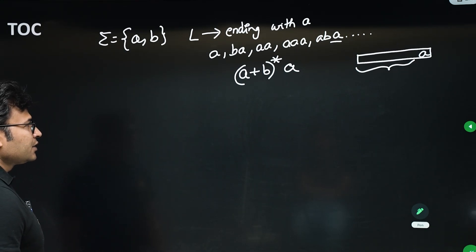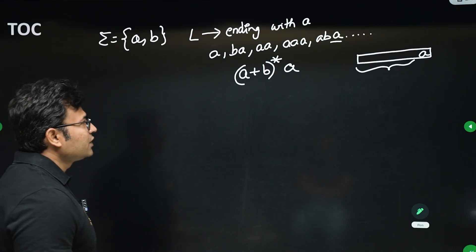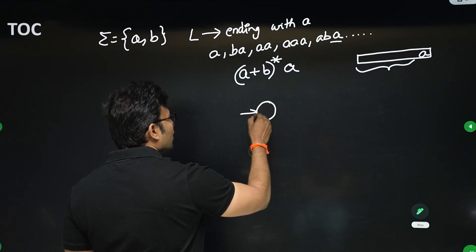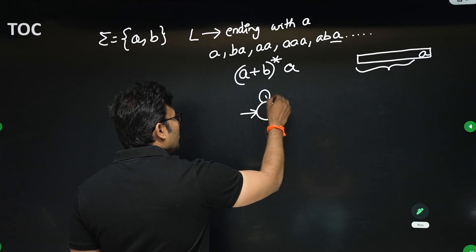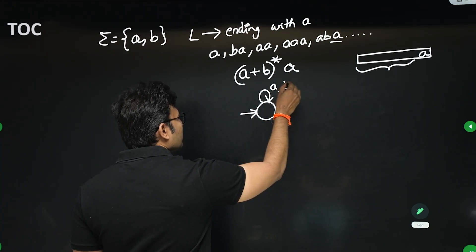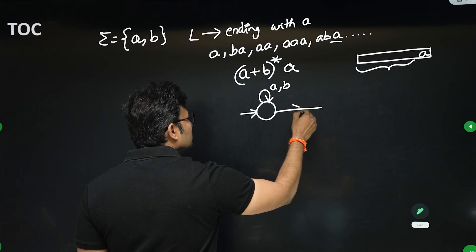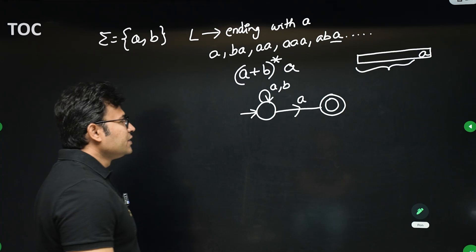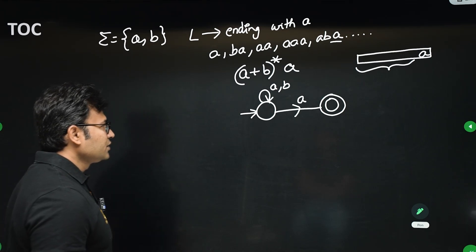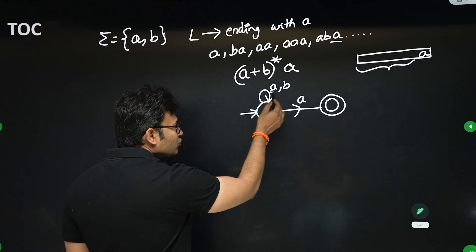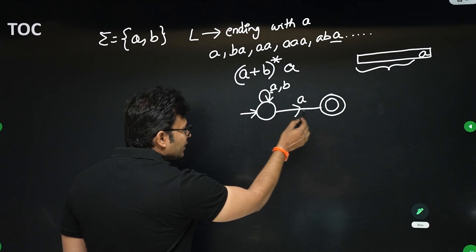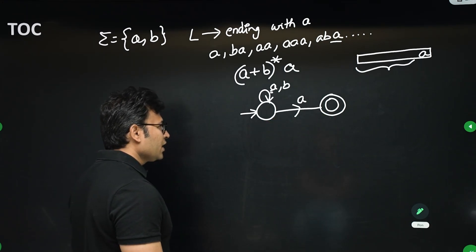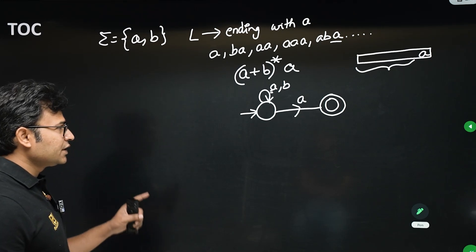Once you get this regular expression, doing an NFA or DFA is very simple. The NFA is (a+b)* followed by 'a' — ending with 'a'. This is an NFA and not a DFA because on input 'a' it can go to the same state as well as another state, and for one state we haven't defined what happens on 'a' or 'b'.